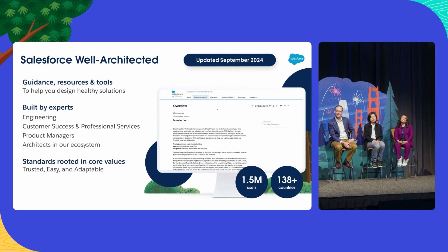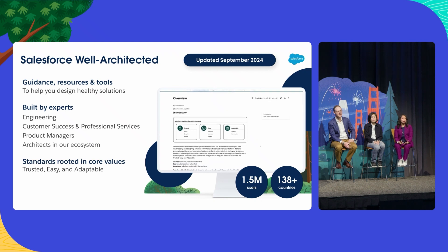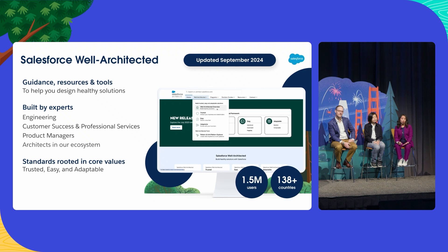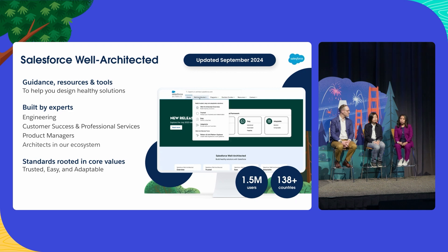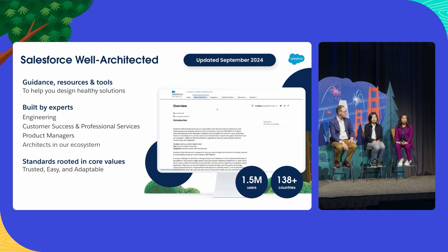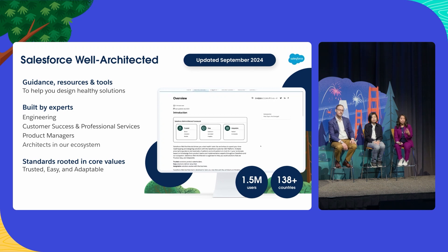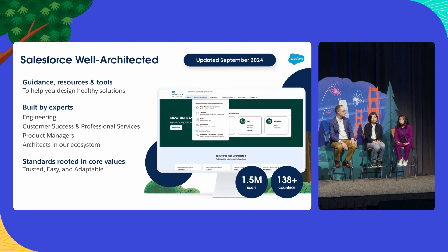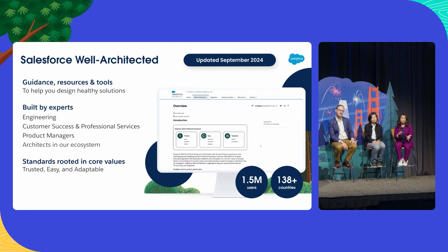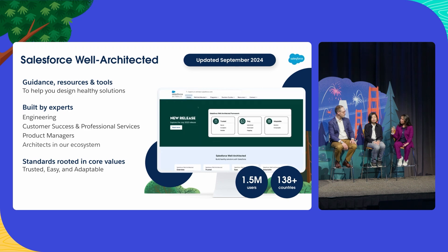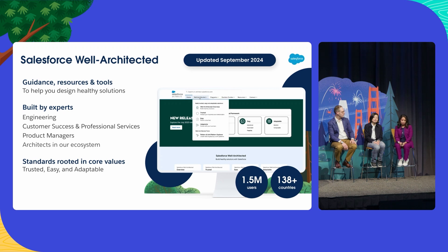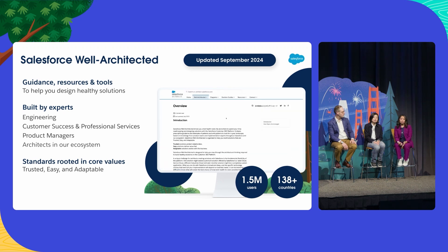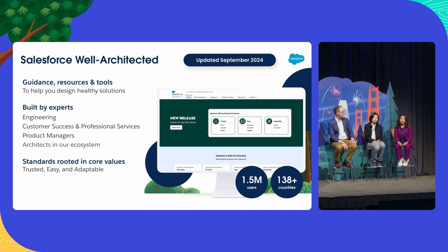Salesforce Well Architected is guidance and best practices on how you can design healthy solutions with Salesforce products. All of this guidance can be found on architect.salesforce.com. It wasn't just built by one team at Salesforce — this is truly guidance that we've put together and vetted with colleagues and experts from across Salesforce: from our engineering teams, folks in customer success and professional services, product managers, and architects in the ecosystem working on the front lines testing these products with real-world use cases. All of the content in Well Architected is structured around three core architectural principles: trusted, easy, and adaptable.